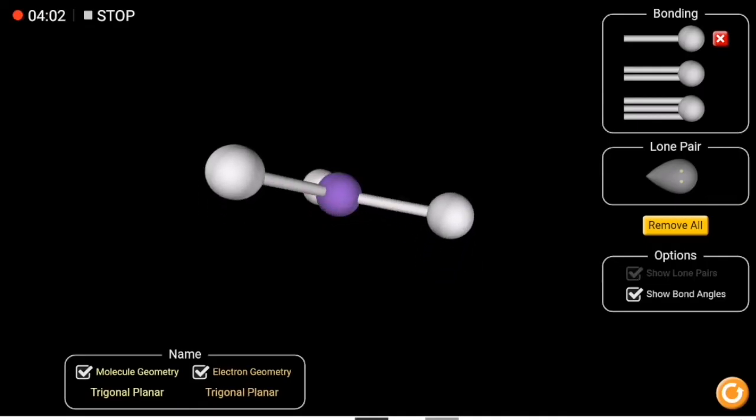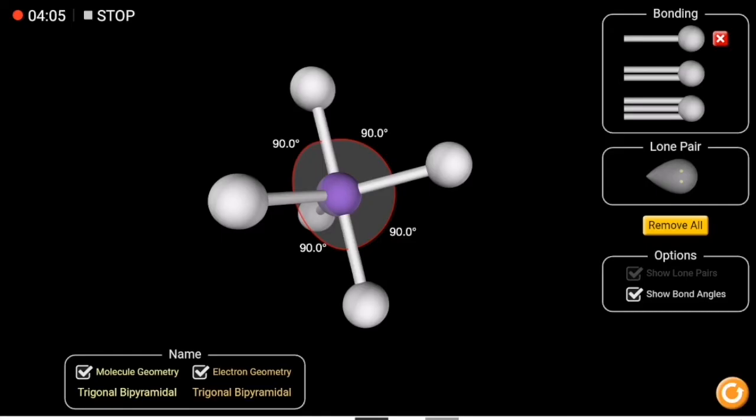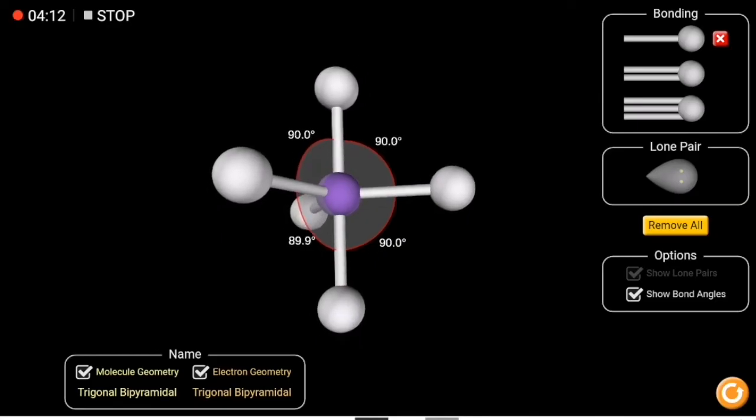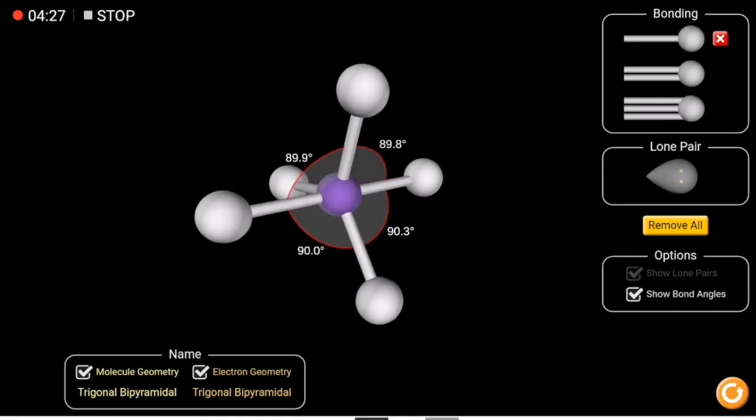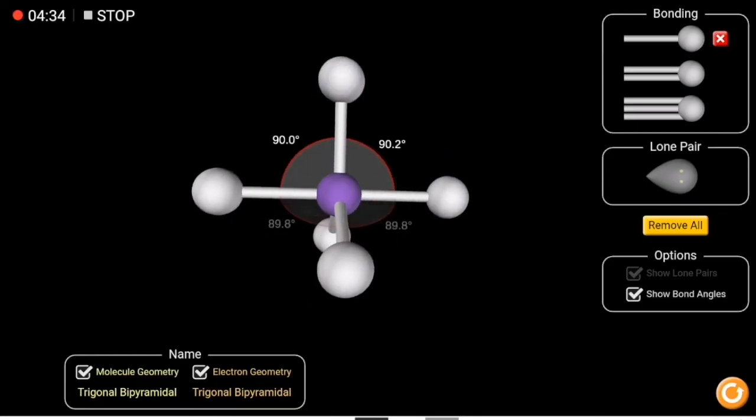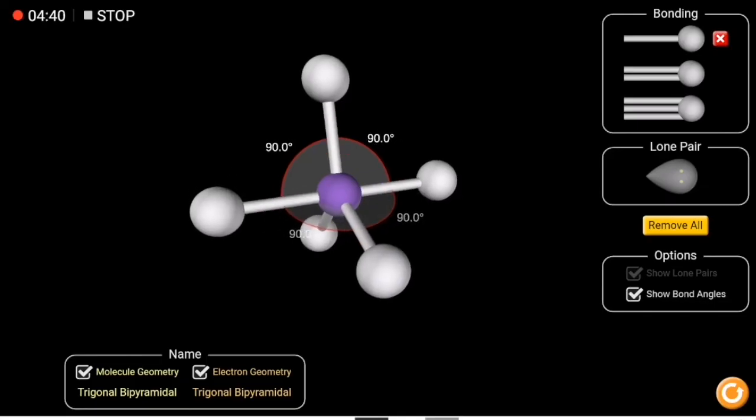Now moving forward and going to the trigonal bipyramidal shape. As you can see in this one, I have two angles, I have two angles, 180 degrees between the horizontal atoms and each one is 90 degrees with the one above. So if I move my molecule this way, you can see here a straight line and two atoms from below. The molecular geometry is also trigonal bipyramidal. A good example of this is PCl5.